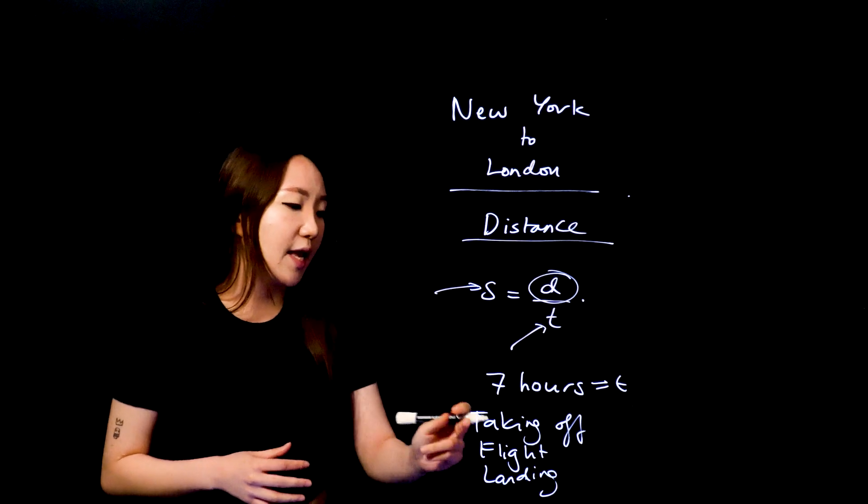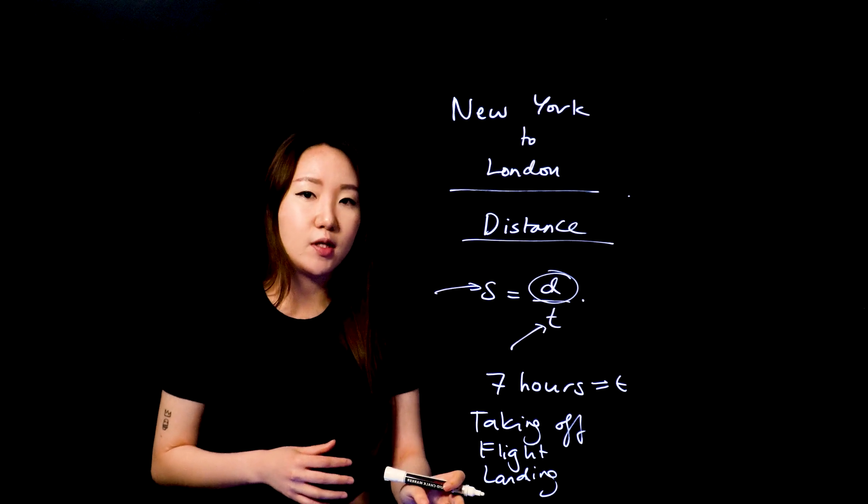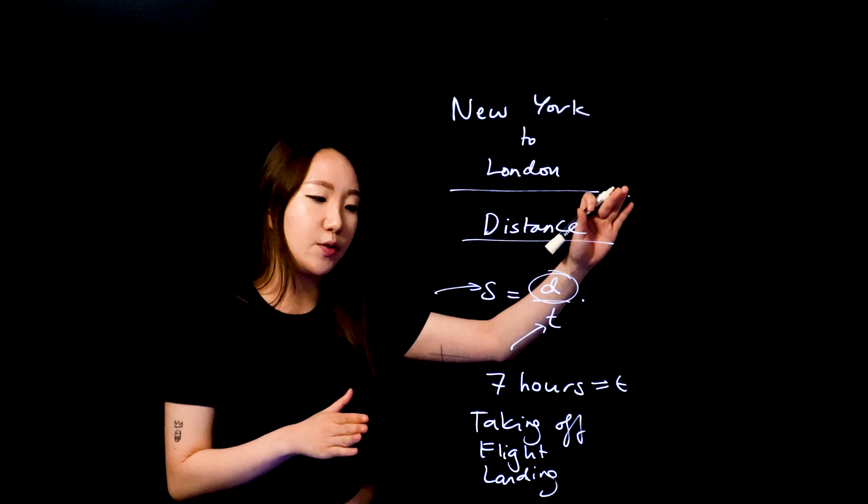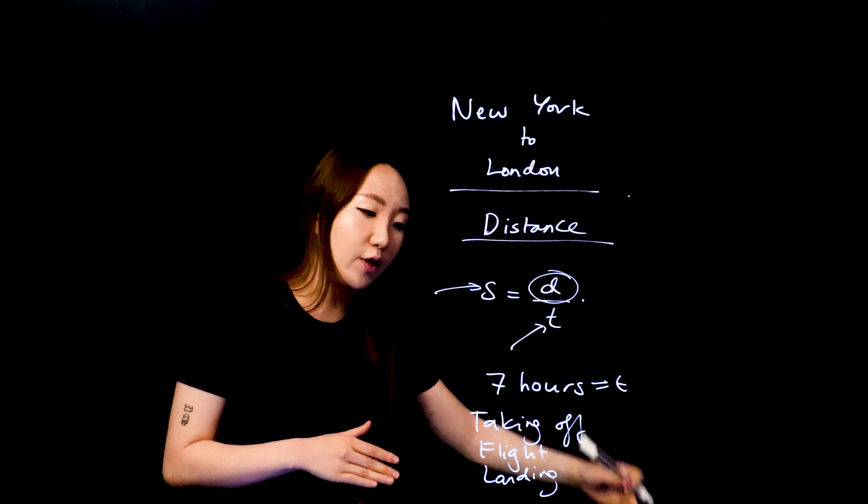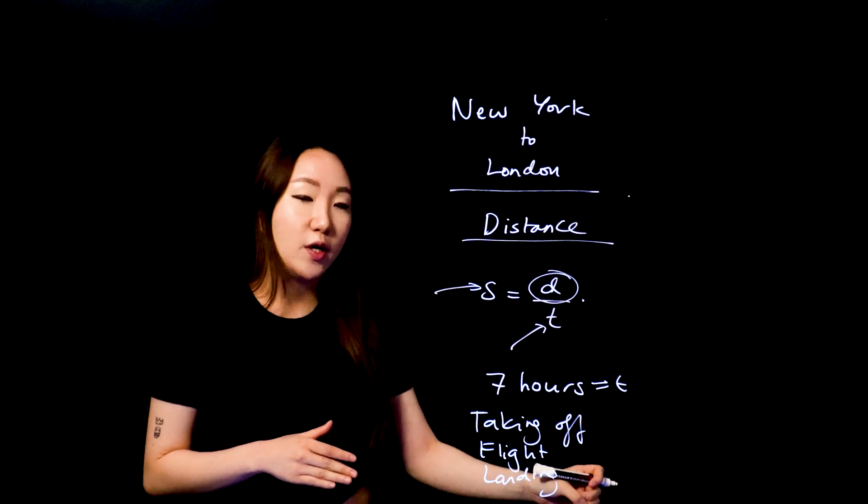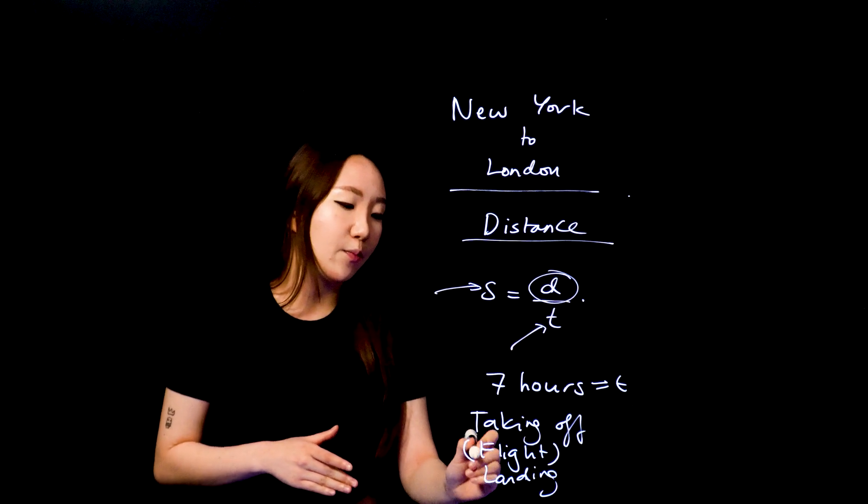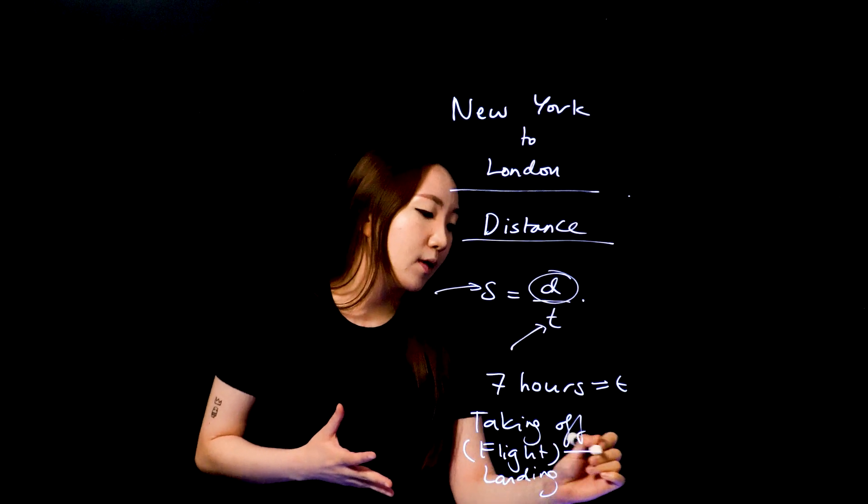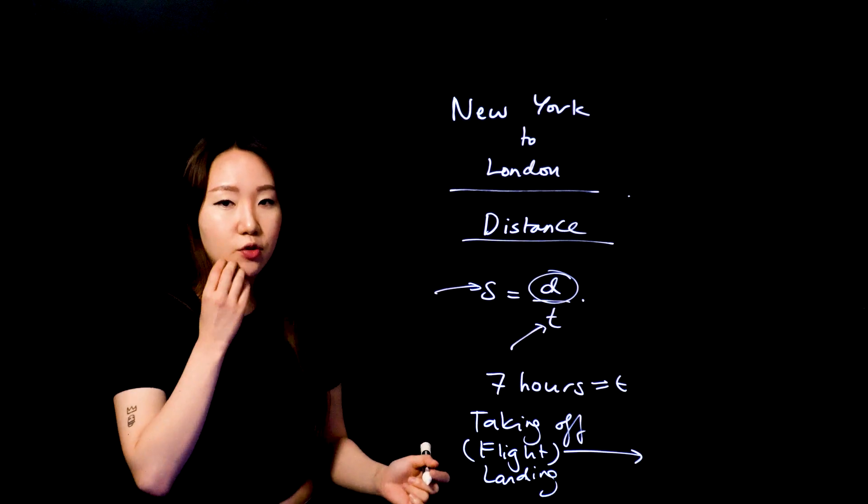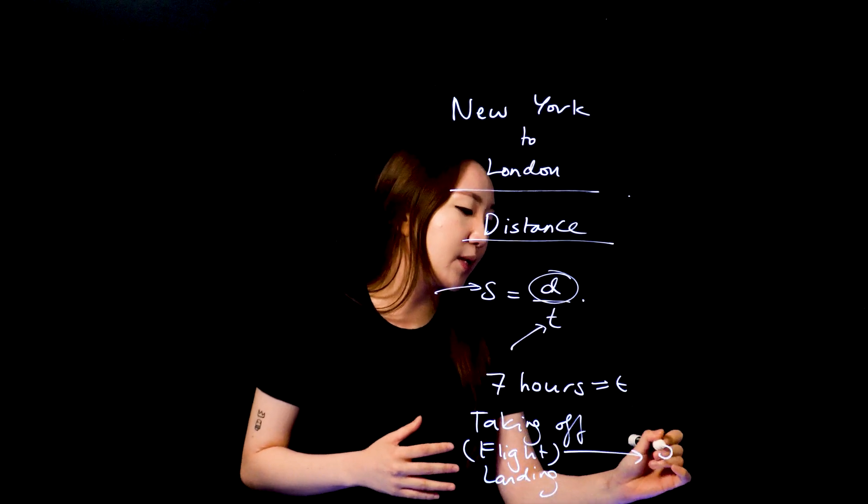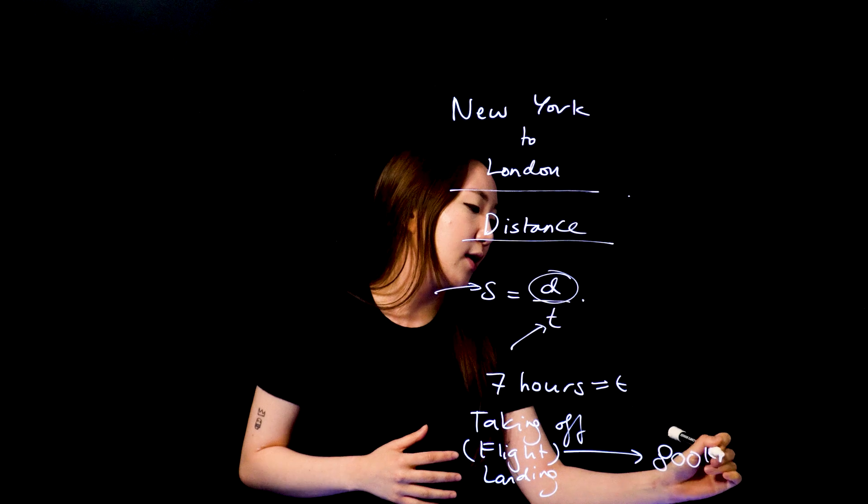I want to consider take off and landing pretty much the same in terms of speed in that it needs to speed up to a certain speed, and then also it needs to decelerate down to when you're landing. And then this flight time, I'm pretty much just going to say as constant. So there's flight time, knowing that commercial planes, usually their cruising speed is around 800 kilometres per hour.